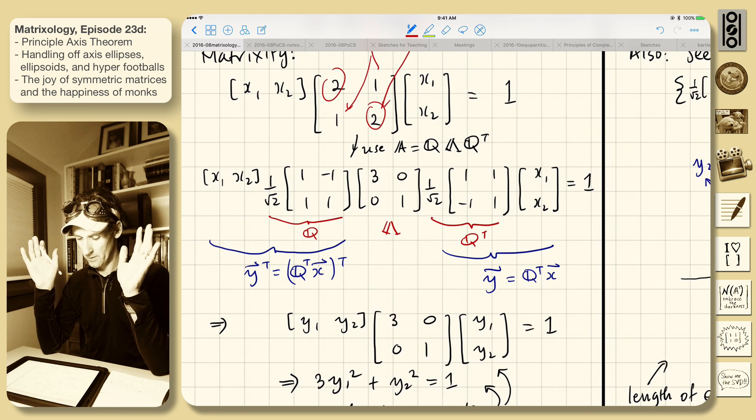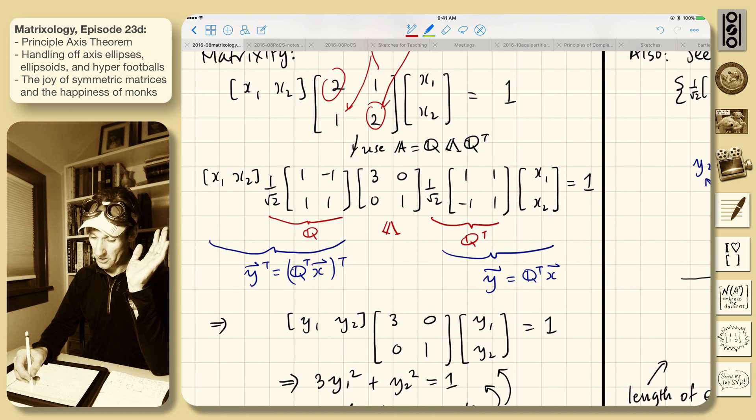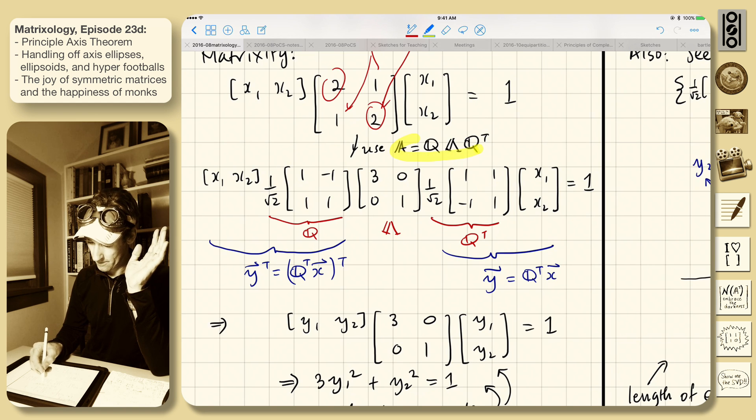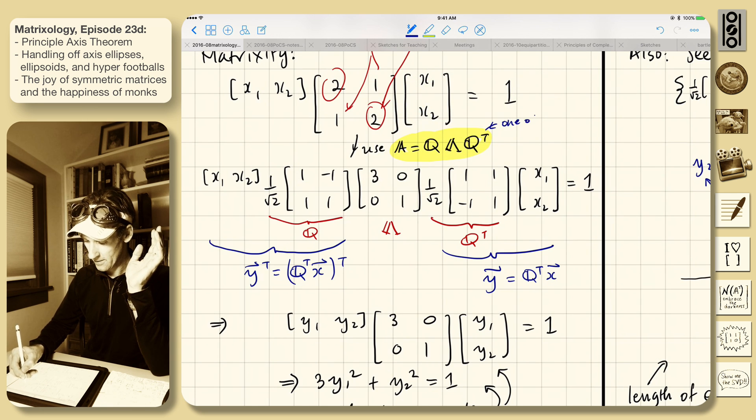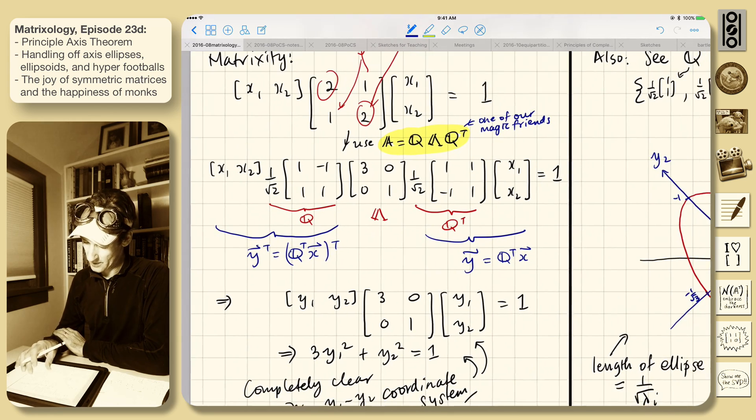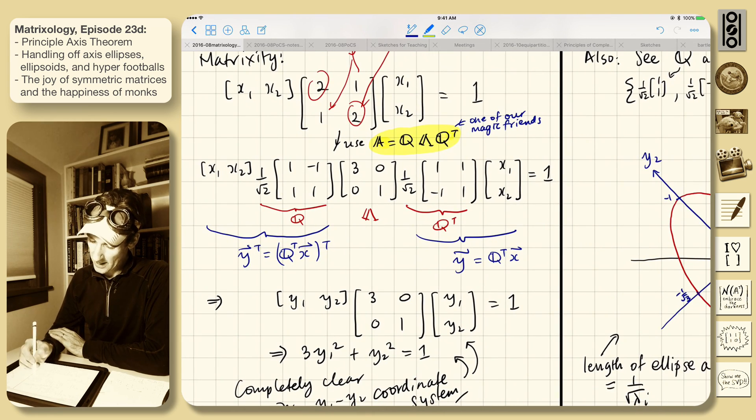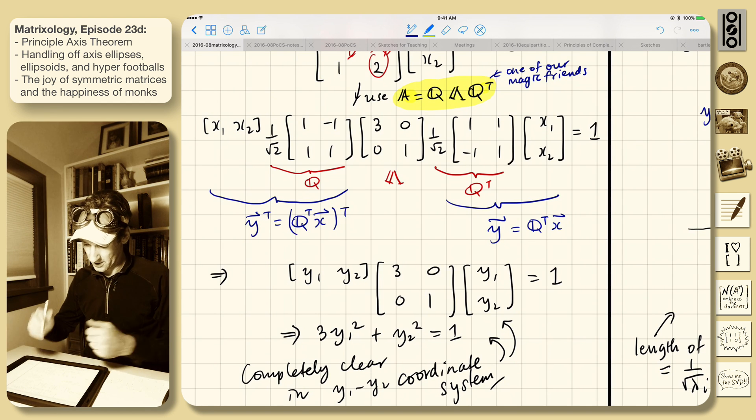Now, instead of using LU, which we were just doing before, LDL transpose, we're going to use our magic friend. Alright. One of our magic friends. We have lots of magic friends now. You can call them magic friends. It's okay. I'm sure there's some people on Reddit who are speaking this way. Which makes it okay. Boom. Right? We've got it. A little bit of calculation there.